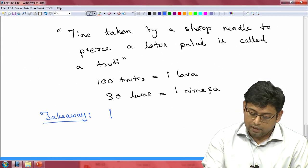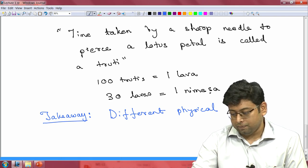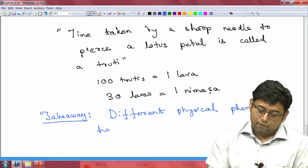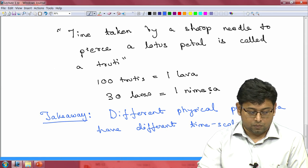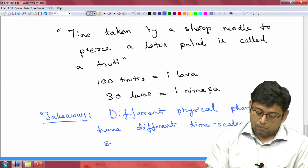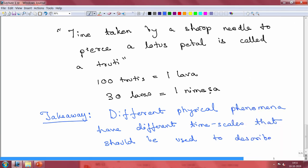The takeaway is that different physical phenomena have different time scales that should be used to describe them. And the idea that systems have an inherent response time in a certain sense. This idea will also be key to our understanding of soft matter. This idea that different physical phenomena have different response times or have different inherent time scales that are associated with them.